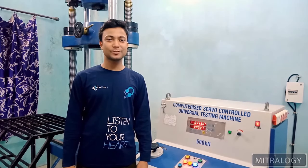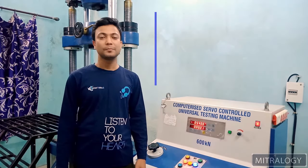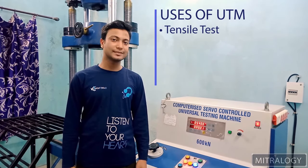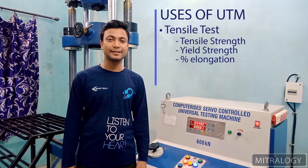Before showing you the components, I want to tell you what we can check in universal testing machine. Mainly we can do tensile test, by which we can measure tensile strength, yield strength and percentage elongation of the material.